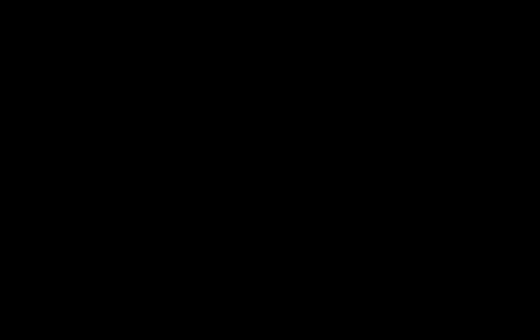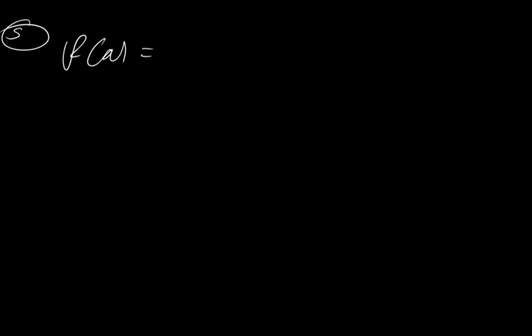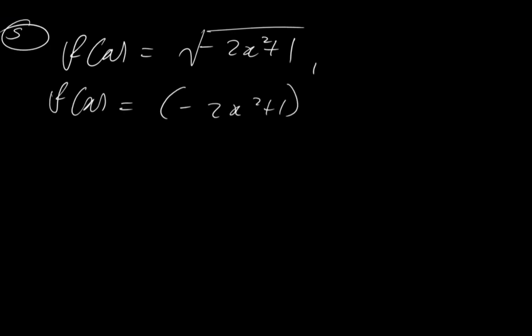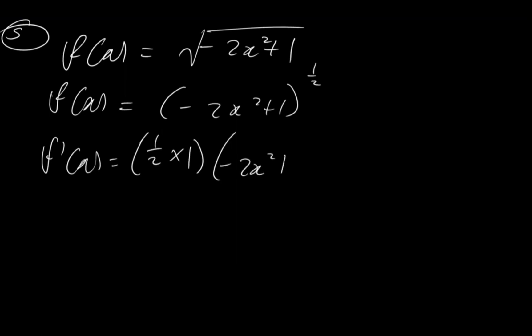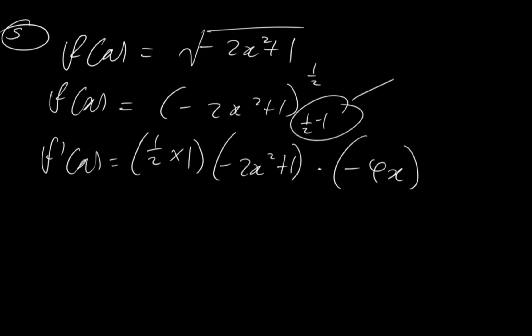Now let's look at example 5. Suppose we have a function f of x being equal to the square root of (minus 2x squared plus 1). What we have to do first is to manipulate this in the form of f of x being equal to (minus 2x squared plus 1) to the 1 over 2. Once you have this, apply the chain rule. So f prime of x is equal to n times c, which is 1 over 2 times 1, multiplied by (minus 2x squared plus 1) to the power of 1 over 2 minus 1, times the derivative of something, which is minus 4x. Computing 1 over 2 minus 1 gives minus 1 over 2, so that's the new power.